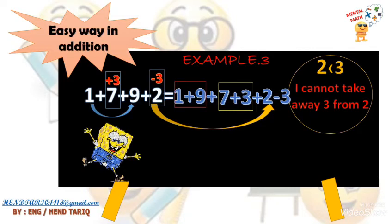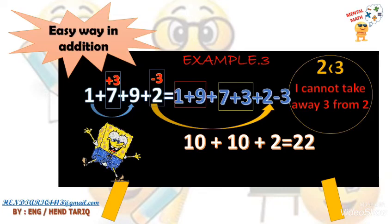So I will write it again. 1 plus 9 is 10, 7 plus 3 is 10, plus 2 is 22. Then 22 minus 3 equals 19.